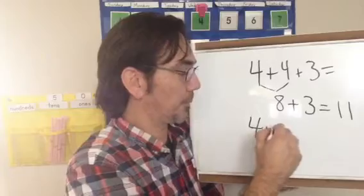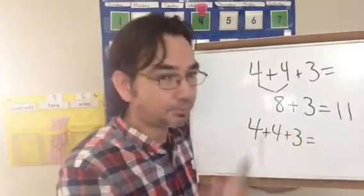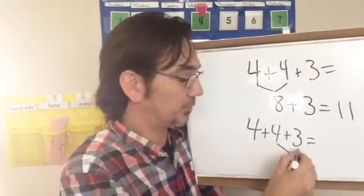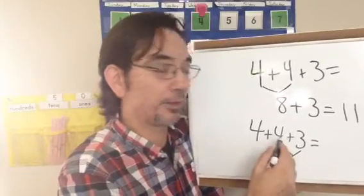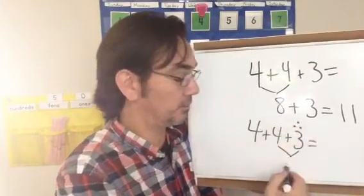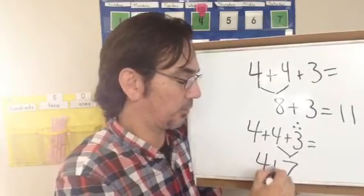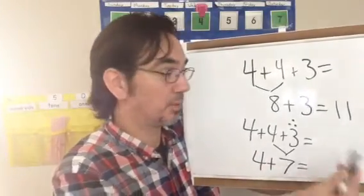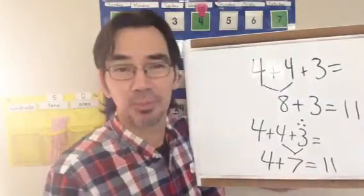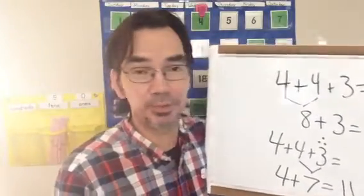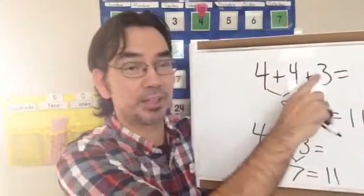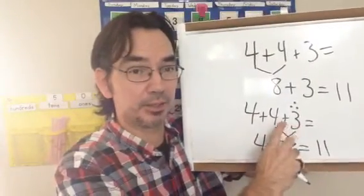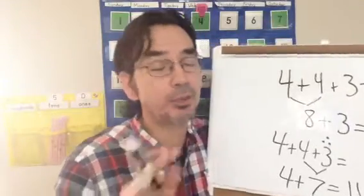But another way I could do it, if I wanted, because you can start off with any two numbers, is I can start off with these two numbers. Four plus three. So, I have four. Add three, five, six, seven. Now, I add this four left over. Four plus seven equals. It's going to be the same answer. There's more than one way to do it. If I have three numbers, I can add these two together first and then this one. Or I can add these two at the end together and then add the first number. That's up to you. However you feel comfortable doing it. Right? And every problem could be different. Right? Just looking at it. It's up to you. Whatever it is that you feel comfortable with. Okay? All right.